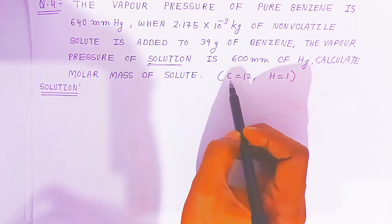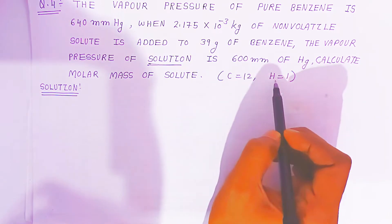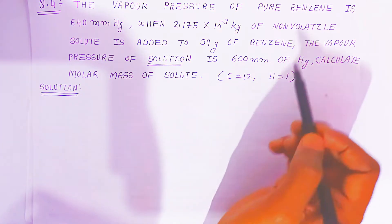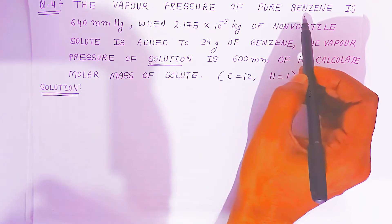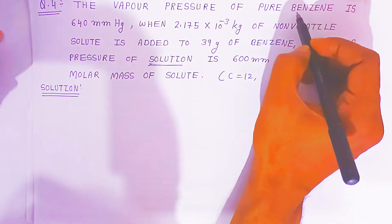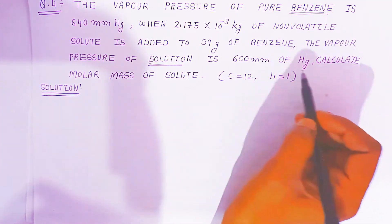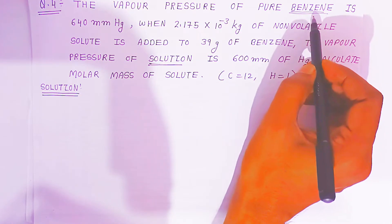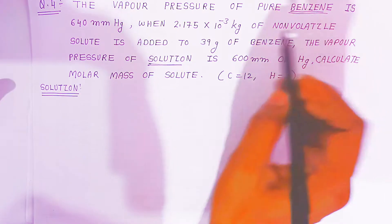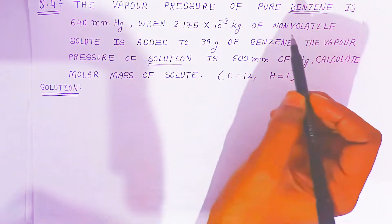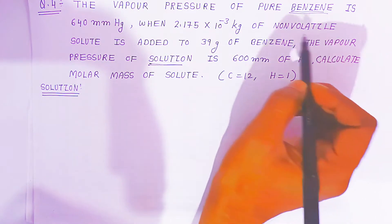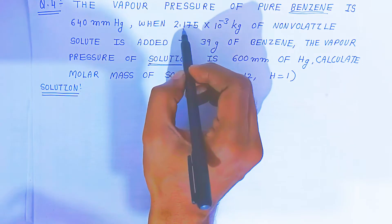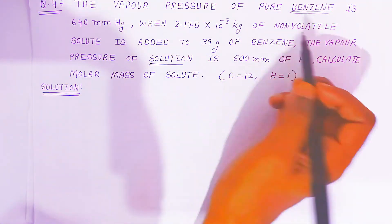Some data is given: atomic mass of carbon is 12 and atomic mass of hydrogen is 1. With the help of these you have to find the molecular weight of benzene. The benzene formula — the very famous benzene formula — is C₆H₆. The weight of the non-volatile solute given is 2.175 × 10⁻³ kg.